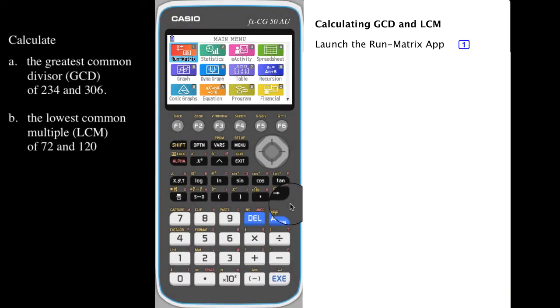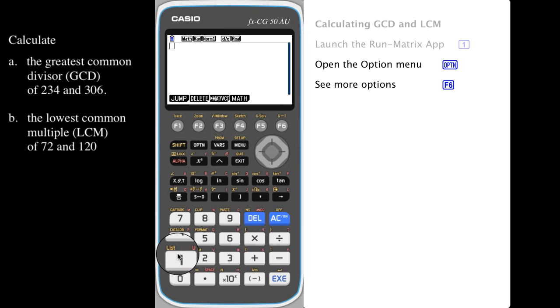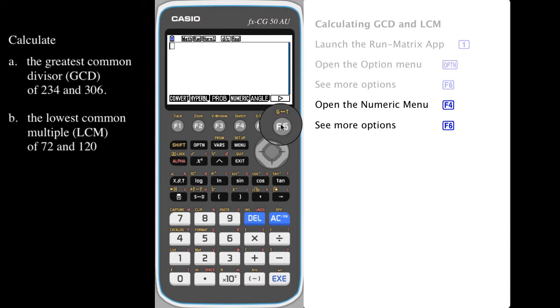To calculate the greatest common divisor or lowest common multiple of two numbers, launch the Run-Matrix app by pressing one from the main menu. Open the options menu, press F6 to see more options, and choose the numeric menu above.